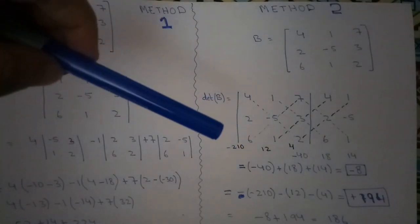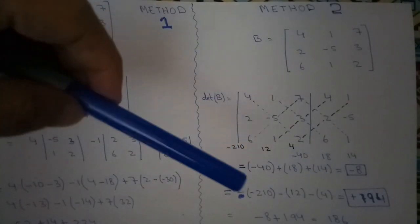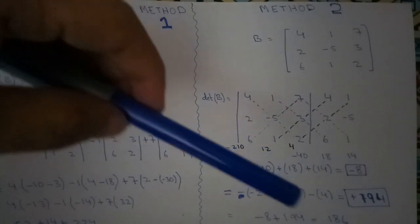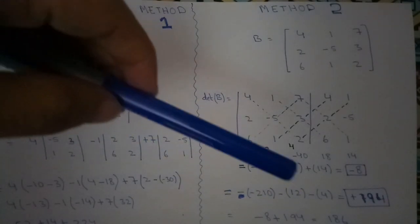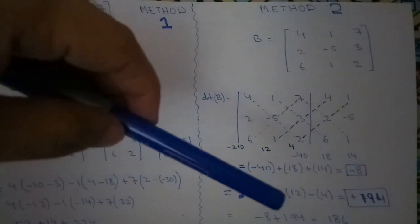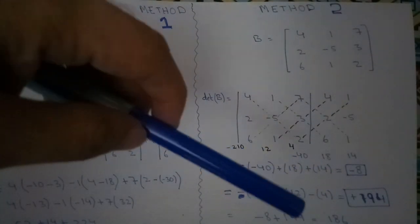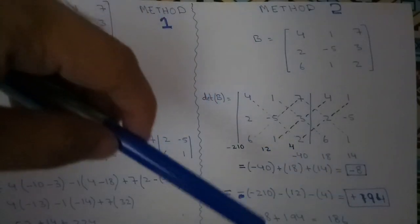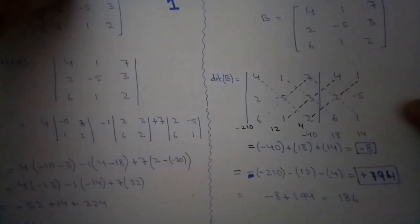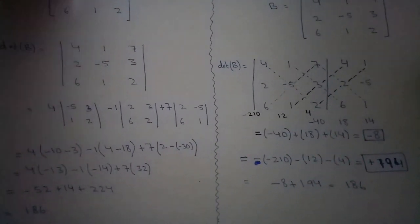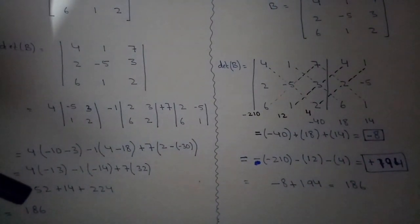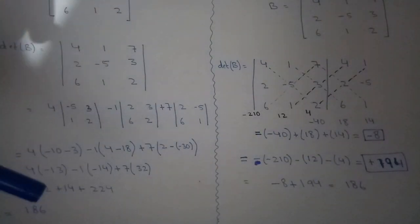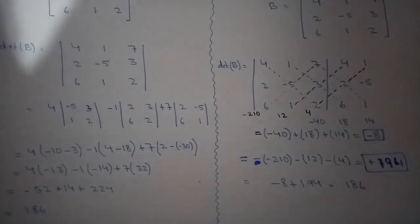Now here you can see that minus 40 plus 18 plus 14, the remaining will be minus 8. Similarly, minus 210 minus 12 minus 4, the answer will be 194. So 194 minus 8, it will be 186. So here you can see the answers from both the methods are matching. Thank you very much for watching this video.